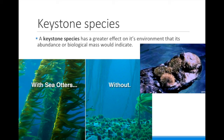One really good example of a keystone species is the sea otter in the kelp forest off the coast of California. A normal kelp forest looks like the picture on the left — it has a lot of tall kelp. The kelp provides shelter, protection, and habitat for many species of organisms.